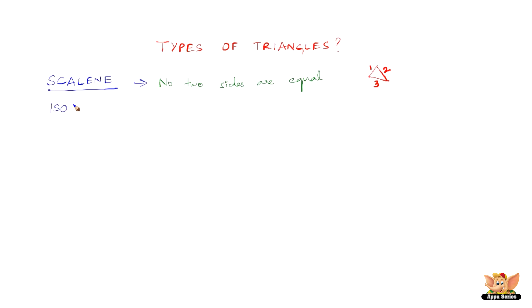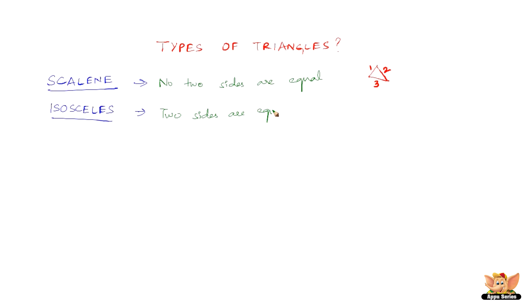The next one is called an isosceles triangle. An isosceles triangle is a triangle two of whose sides are equal in length. So here, two sides are equal.